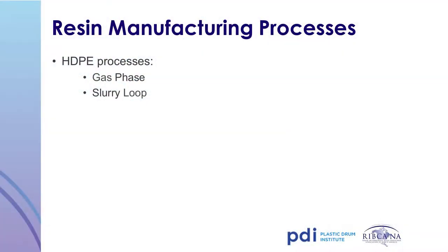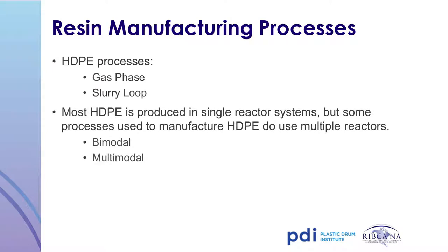Two of the most common processes used to manufacture polyethylene resin are gas phase and slurry loop. The majority of high-density polyethylene is made using a single reactor system; however, there are other processes called bimodal or multimodal processes which employ multiple reactors. Today we are going to focus on gas phase and slurry loop processes.